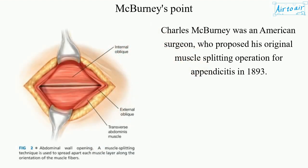Charles McBurnie was an American surgeon who proposed his original muscle-splitting operation for appendicitis in 1893.